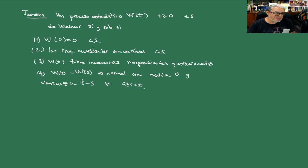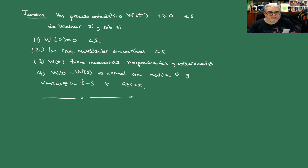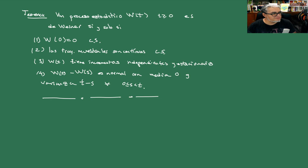El regreso, que es la parte más importante — que si tenemos un proceso genérico que cumple estas cuatro características, concluimos que es de Wiener — estas cuatro características las podemos usar para probar vía la definición que son procesos de Wiener. Pero bueno, eso queda como reto y le paramos aquí por hoy; nos vemos en una siguiente sesión.